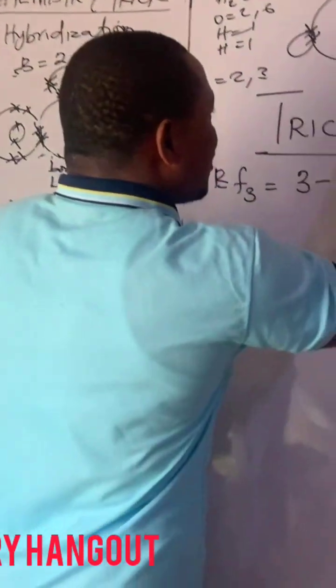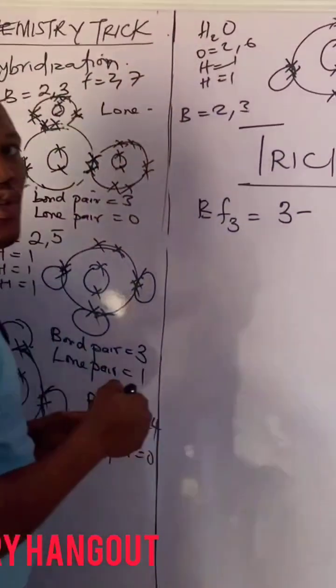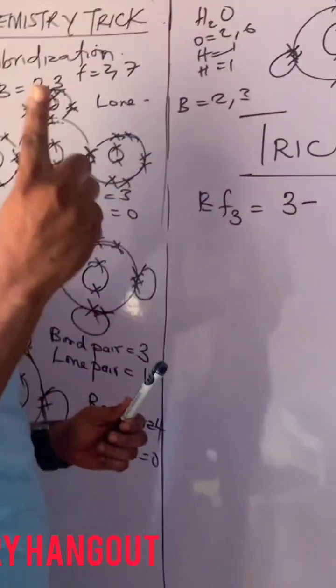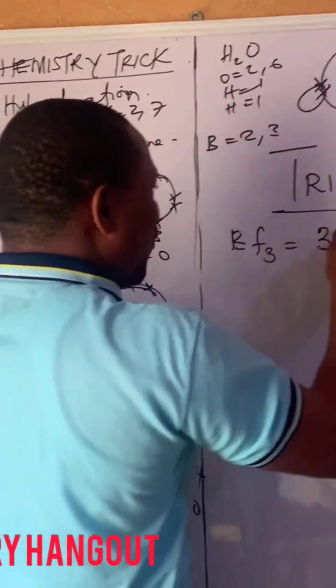So fluorine is what? It is 2, 7. That means we need 1. So when it collects 1, it becomes minus 1. So it will now be minus 1.